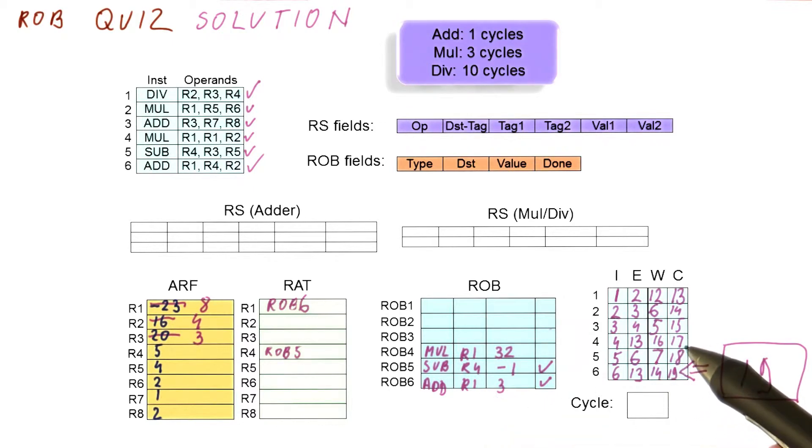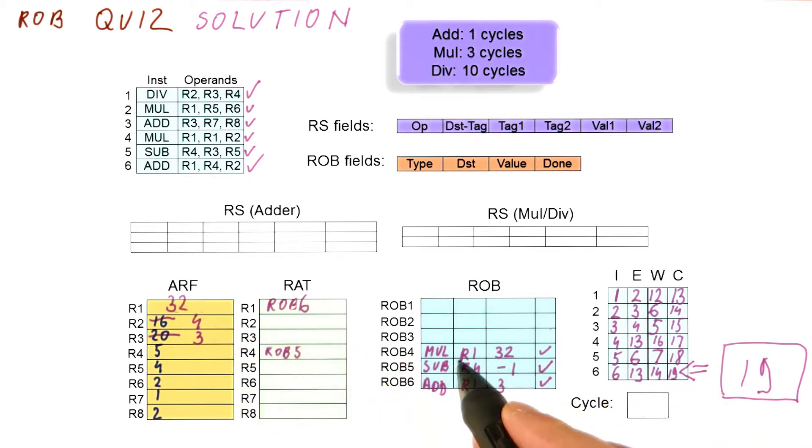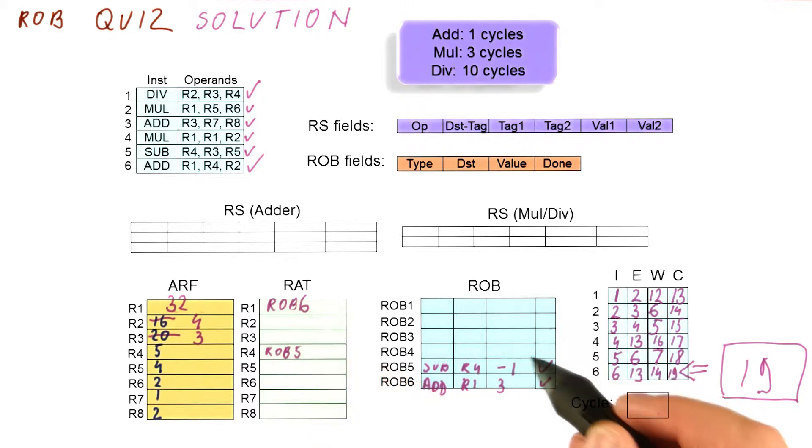So in cycle 17, this gets marked down, 32 gets deposited in register 1. We check the mapping for R1, is it ROB4? No, we leave the rat alone and free this ROB entry.